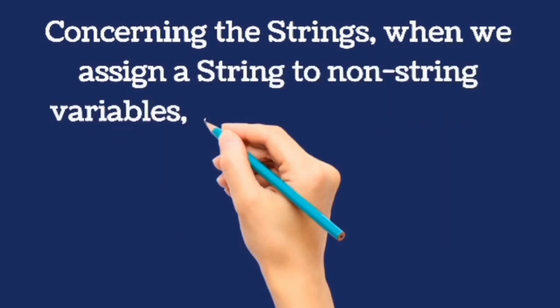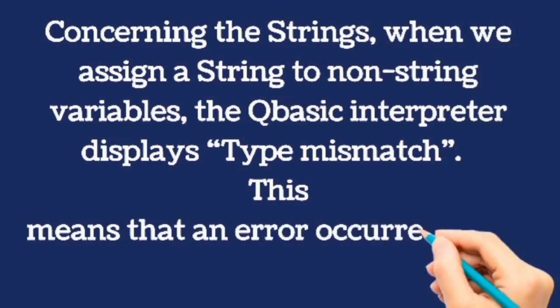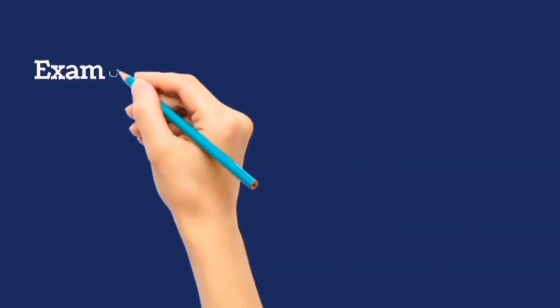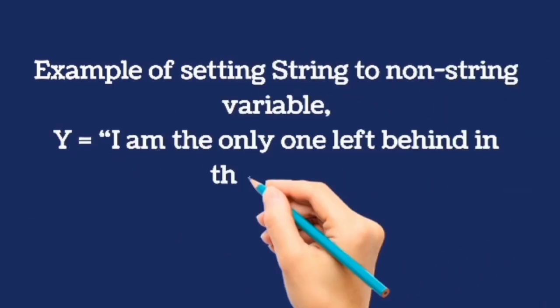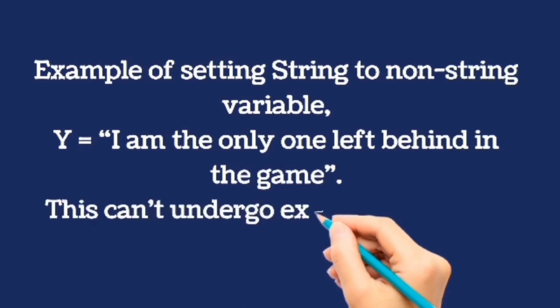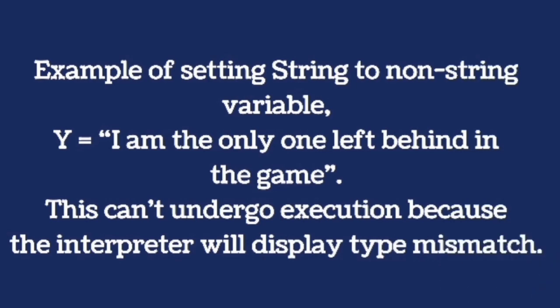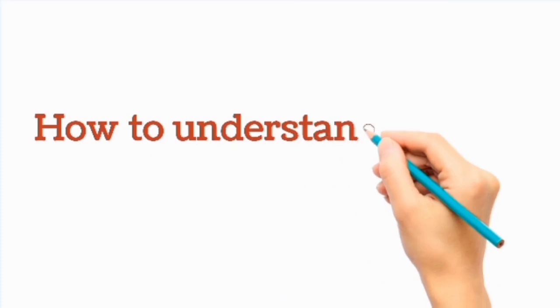Concerning the strings, when we assign a string to non-string variables, the QBasic interpreter displays type mismatch. This means that an error occurred in the code. Example of setting string to non-string variable: Y equals I am the only one left behind in the game. This can't undergo execution because the interpreter will display type mismatch. Why? Because there is no dollar sign together with our Y. The Y is not having a dollar sign or a string sign. Therefore, an error occurred.